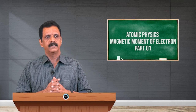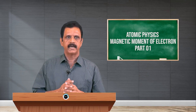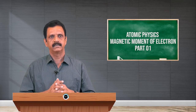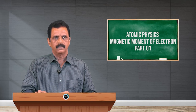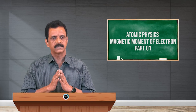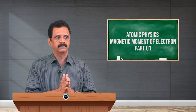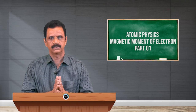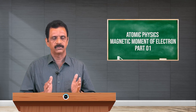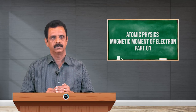Now let us discuss the total magnetic moment of the electron, which is the sum of the two quantities mu_l and mu_s.